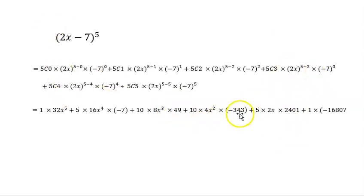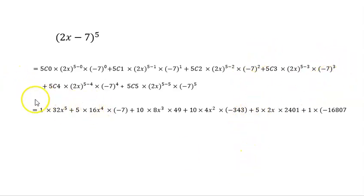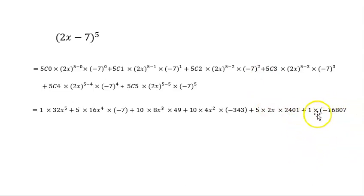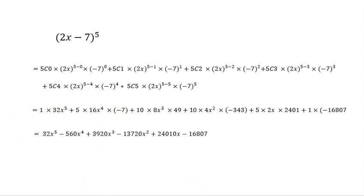5C2 = 10, and 2^3 = 8, so the third term is 10 × 8x^3 × (−7)^2. Since the exponent is even, (−7)^2 = 49, giving +3920x^3. Then 5C3 = 10, and 2^2 = 4, so the fourth term is 10 × 4x^2 × (−7)^3. Since the exponent is odd, (−7)^3 = −343, giving −13720x^2. Then 5C4 = 5, giving 5 × 2x × (−7)^4 = 5 × 2x × 2401 = 24010x. Finally 5C5 = 1, and (2x)^0 = 1, times (−7)^5 = −16807.